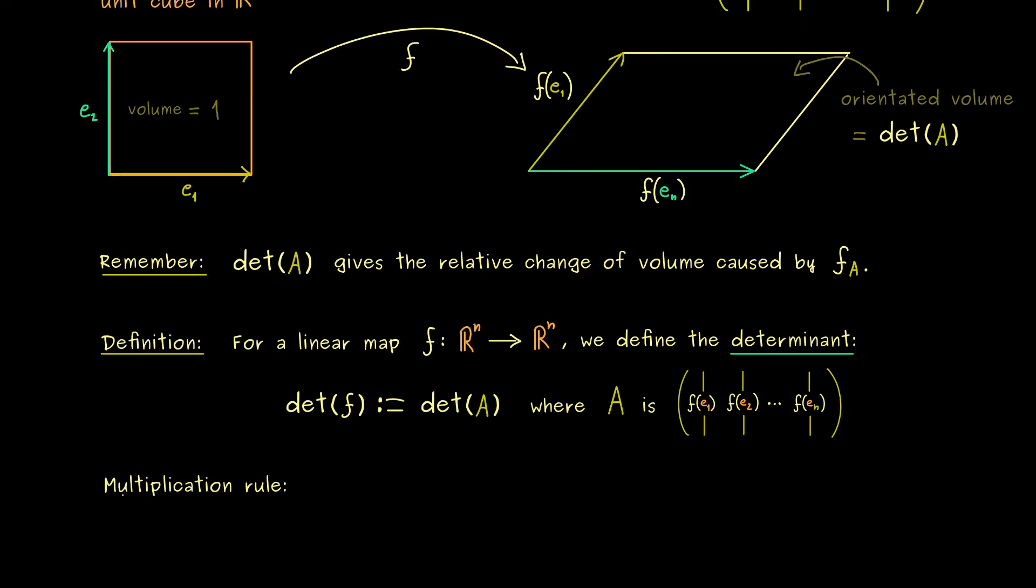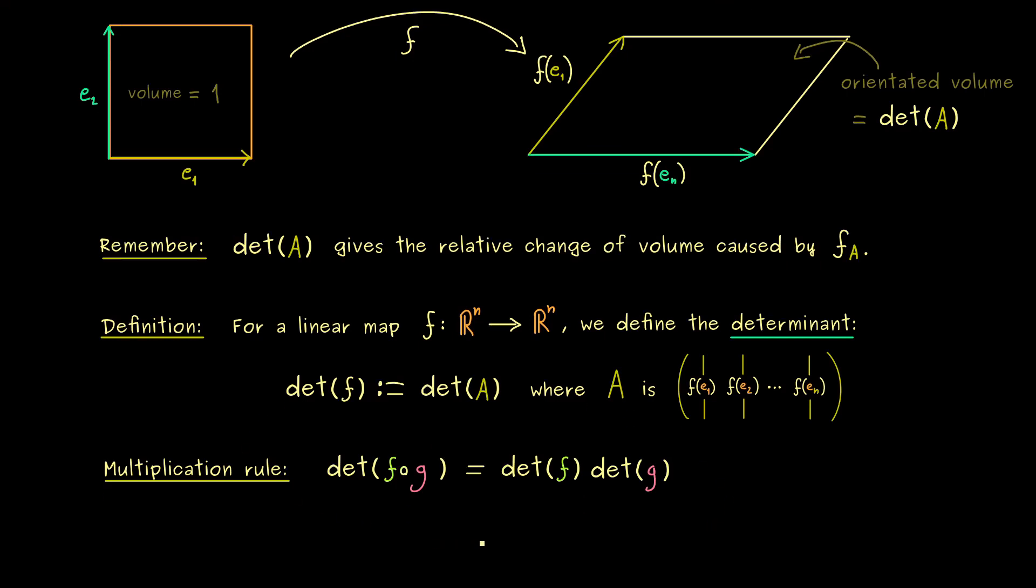So for example, for the multiplication rule, we now have to consider compositions of linear maps. So more precisely, we would have the composition f after g inside the determinant function. And then we know, we can simply write it as a product of two determinants. In fact, this follows immediately from the multiplication rule for the determinants of matrices. But now on this abstract level, this is also something we can use.